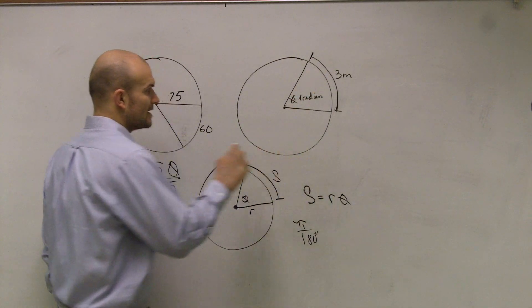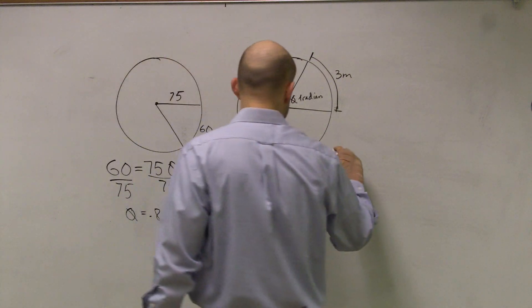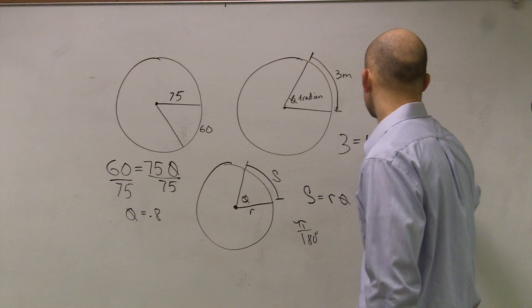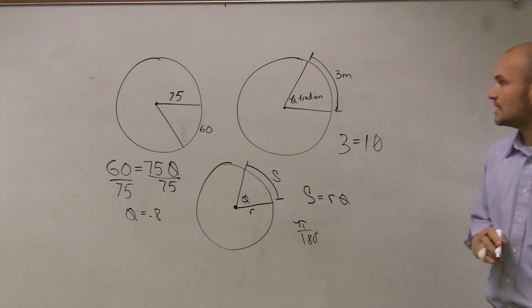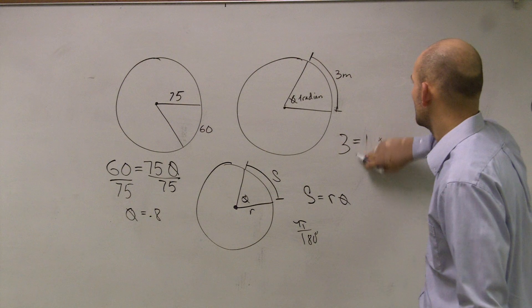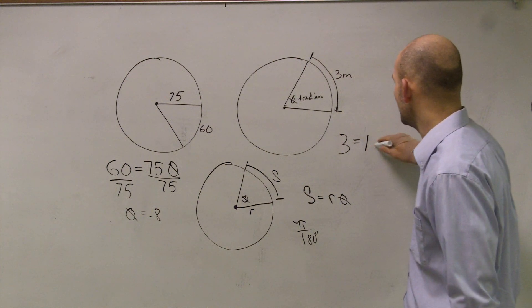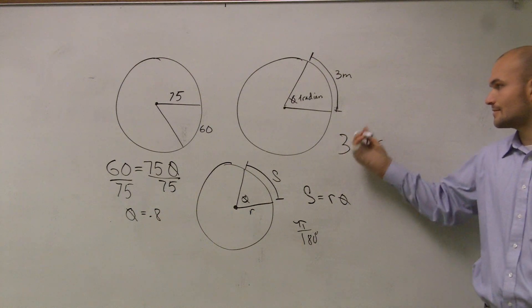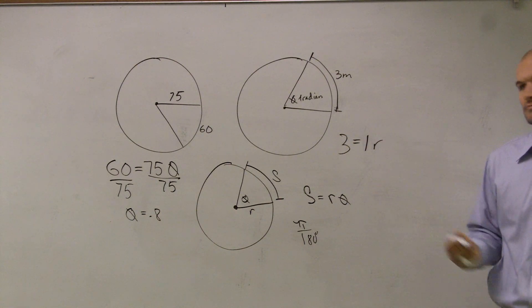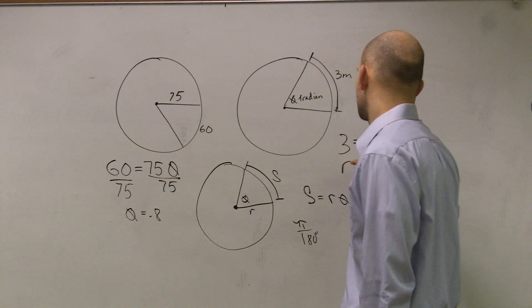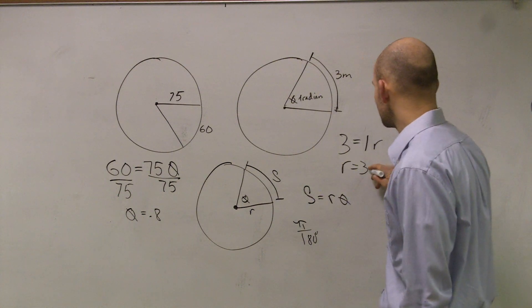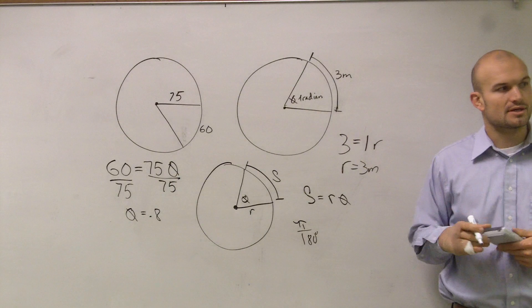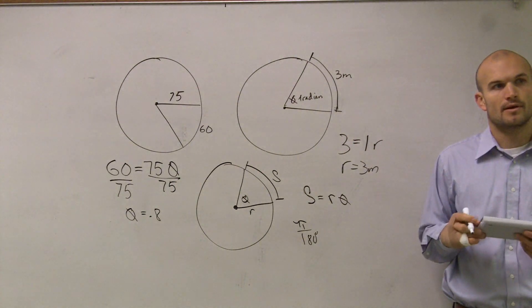So my arc length, 3 meters, equals my radius times theta, which is 1. I'm sorry, my theta is 1 times r. So what is r equal to? R is just 3. Therefore, my radius for this is 3 meters, because this one gave us units to use.